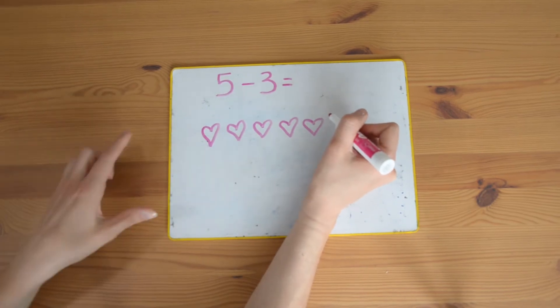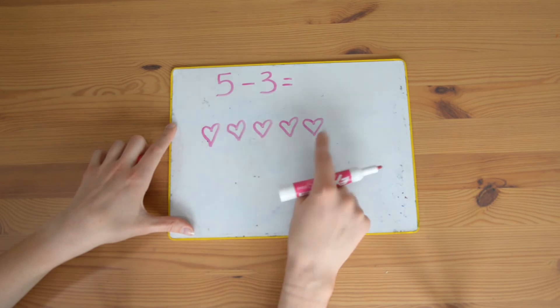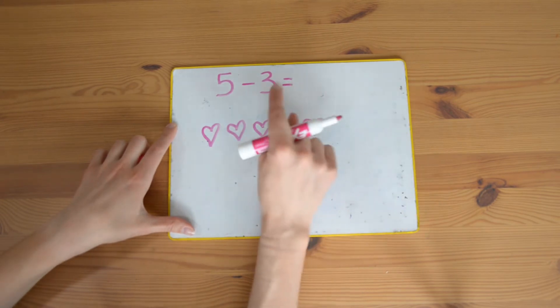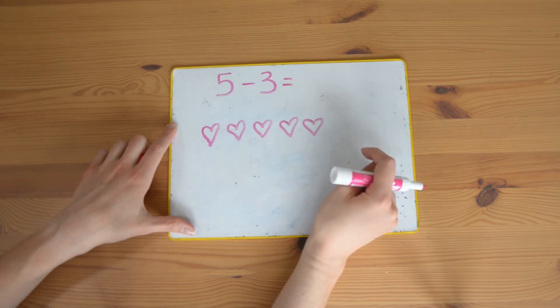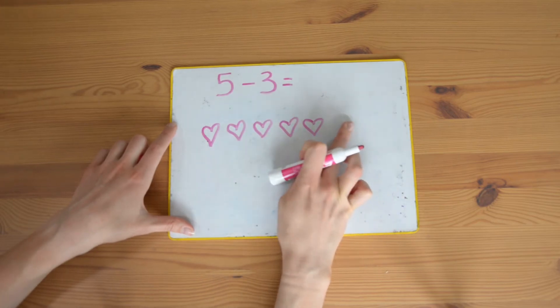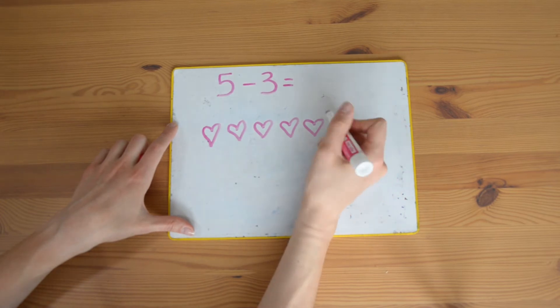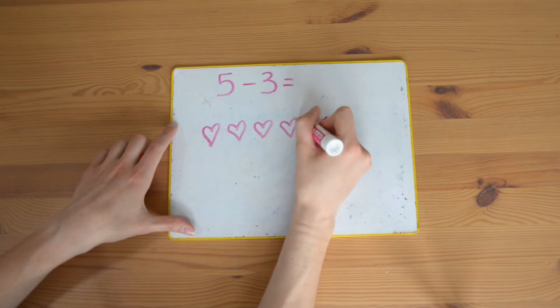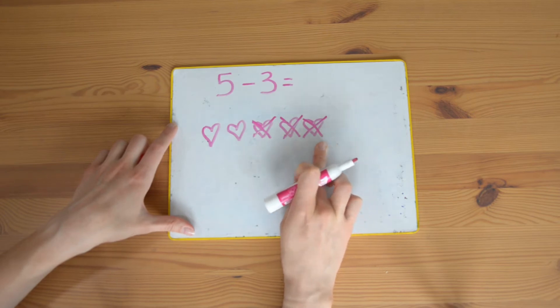Now I've drawn five, I always just double check: one, two, three, four, five. Perfect. Now the other number tells me how many I'm taking away or subtracting, so that is three. Because I've got a whiteboard, I could just rub it out, but if you don't have a whiteboard and you're using pencil, you can cross them out: one, two, three.